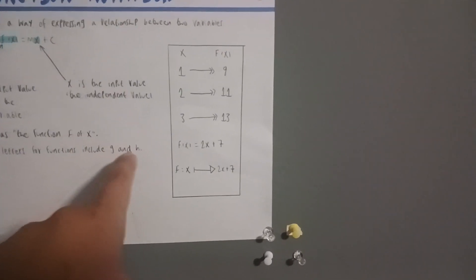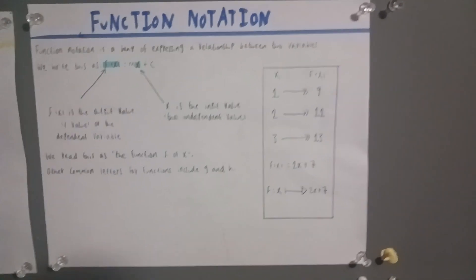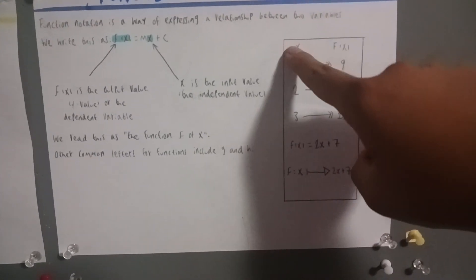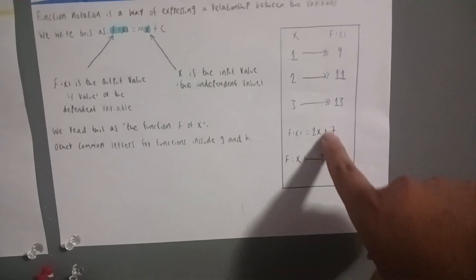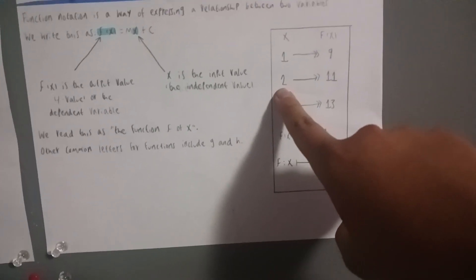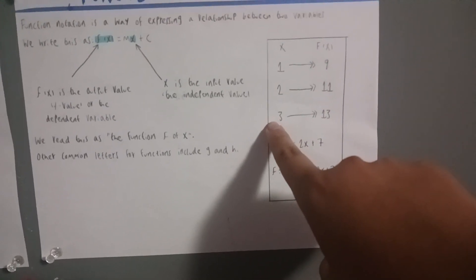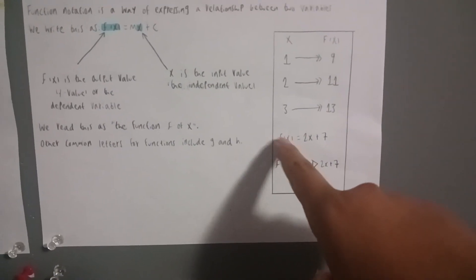Other common letters for functions include g and h. Right here's a table: x and f of x. One goes to nine, two goes to eleven, three goes to thirteen.